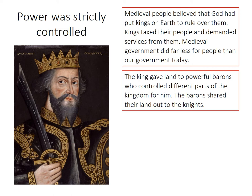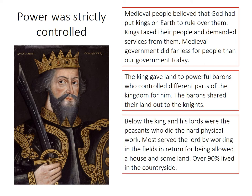The barons, in return, shared their land out to the knights — those people we've seen in previous pictures. Below the king, barons, and knights, at the bottom of this system of power and hierarchy, were the peasants. The peasants did the most hard physical work — mostly serving the lord by working in the fields, and in return were often given a house and some land. In the Middle Ages, over 90% of people lived in the countryside.